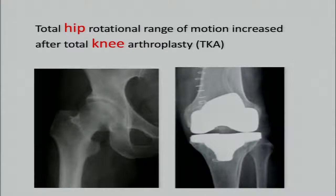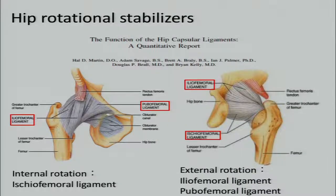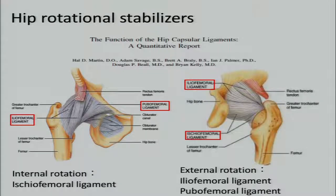From the results, the hip joint was not directly treated in TKA, but the total of internal and external rotational range increased. This may be because TKA also changes the hip alignment. The change in hip alignment may influence the elasticity of the hip capsule ligament, which is the primary stabilizer of the hip rotational moment. As a result, hip rotational range may be influenced.